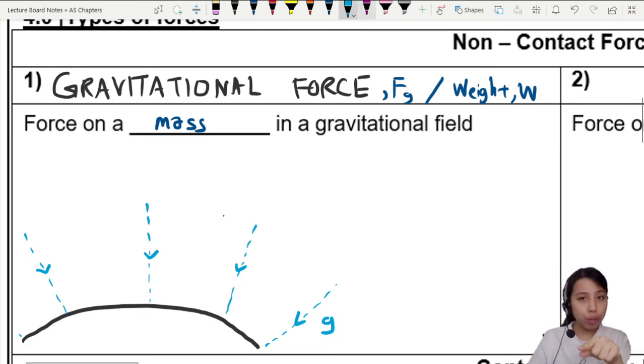Because of this field, there will be a force on a mass pulling it down exactly in the same direction as the field. We call this FG or weight, always pointing to the center of the earth.